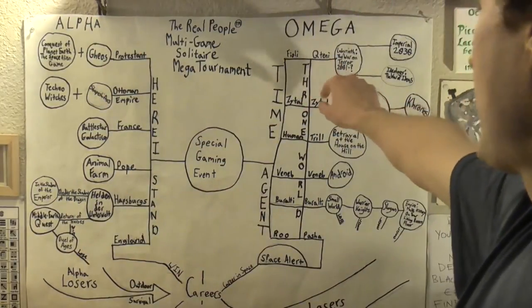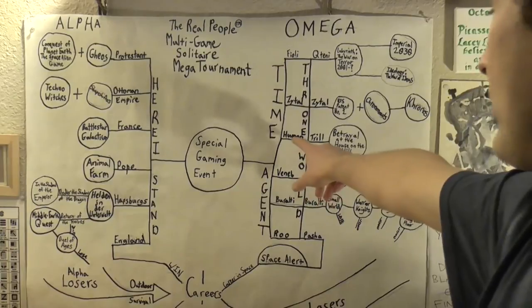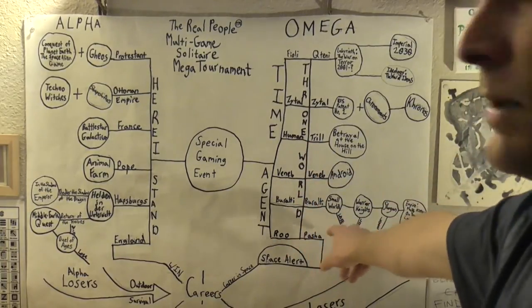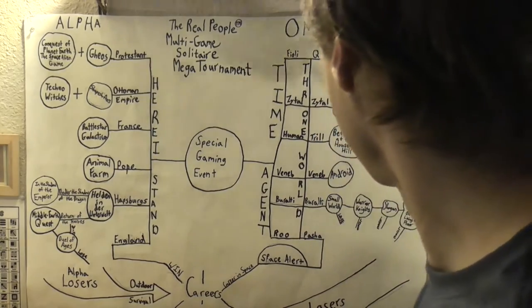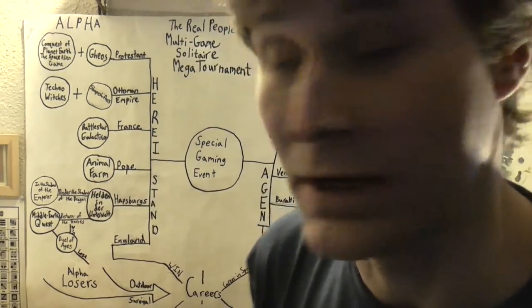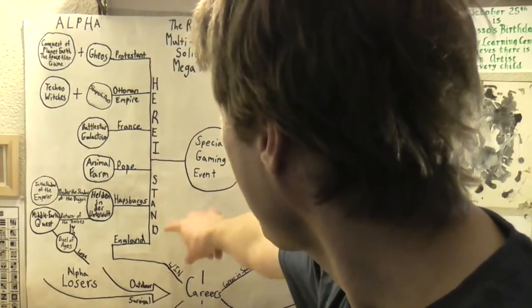On the other side we have the Fioli-Kateni leg, the Zytol-Zytol leg, the Human-Trill leg, the Venom-Venom leg, the Braulti-Braulti leg, and the Ru-Pasha leg on the Omega bracket. Now these words, some of you may recognize from a particular game.